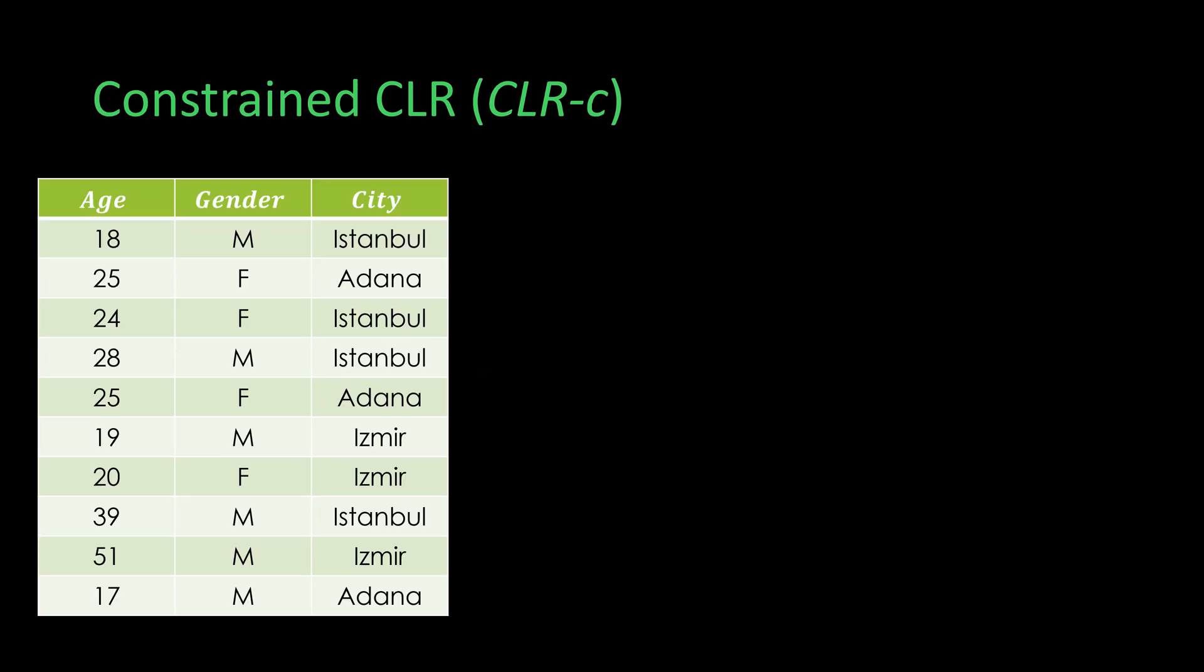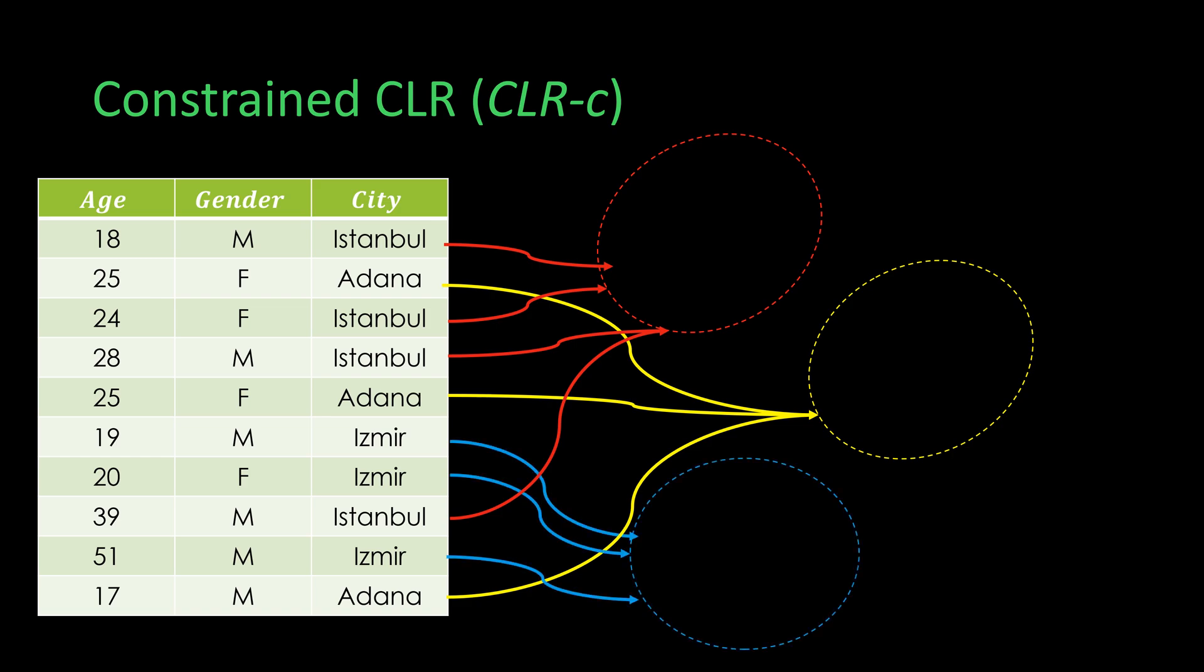The second is constraint CLR, or CLRC. This is a straightforward approach where no learning is involved. New data points are clustered based on user-defined constraints. A constraint is a relevant feature that is selected or extracted. Thus, points satisfying that constraint will be assigned to a certain cluster. In this example, the constraint feature is chosen as the city.